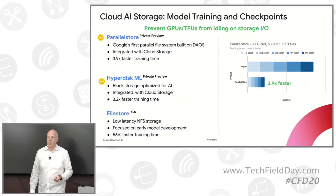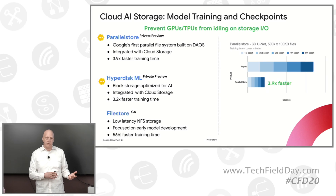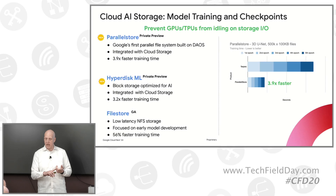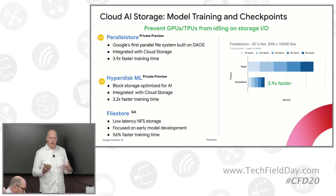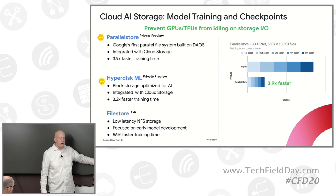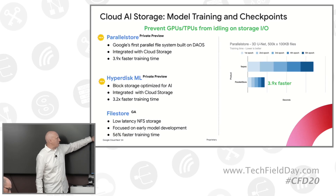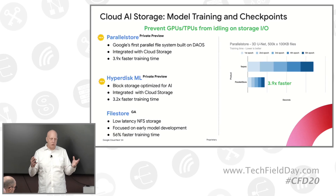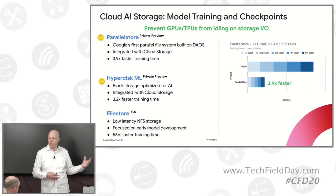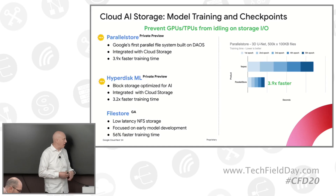For other training, we announced Parallel Store last year. This is our first parallel file system offering, based upon Intel DAOS. If you think about different storage requirements for training, you sometimes need ultra-low latency, very high throughput, and the ability to handle small files. A parallel file system works differently than a traditional NFS system, which we also have with FileStore. This is also integrated with Cloud Storage — if you want to extract a subset of data to begin training, we're working on caching from Parallel Store to make it easy to extract just the data you need from Cloud Storage.